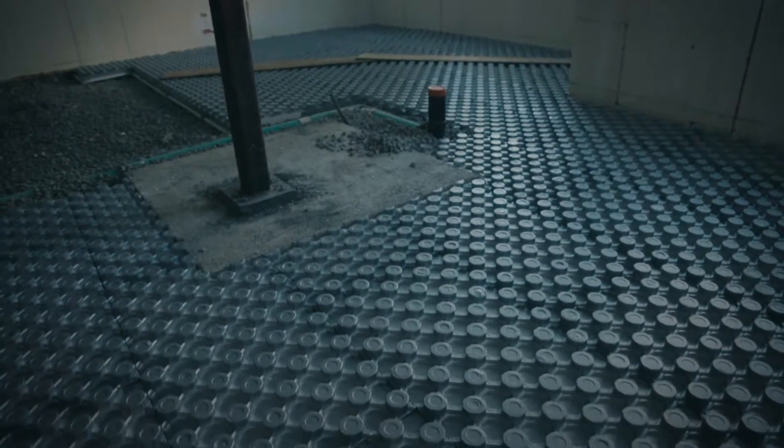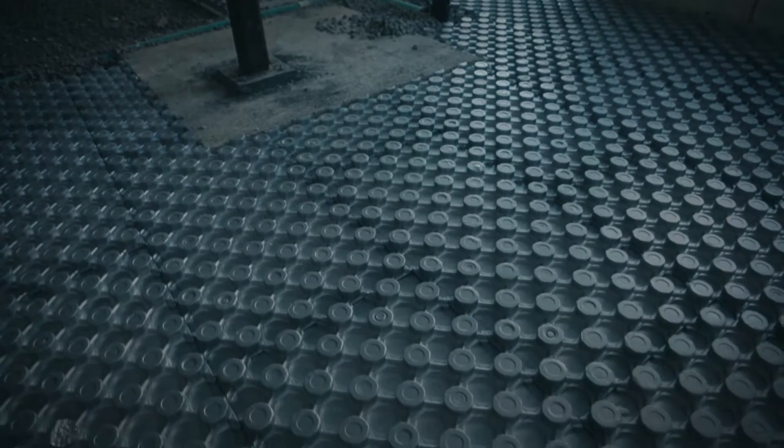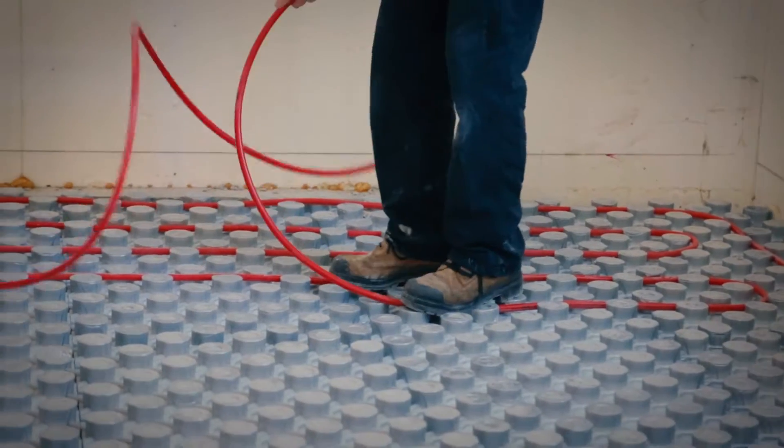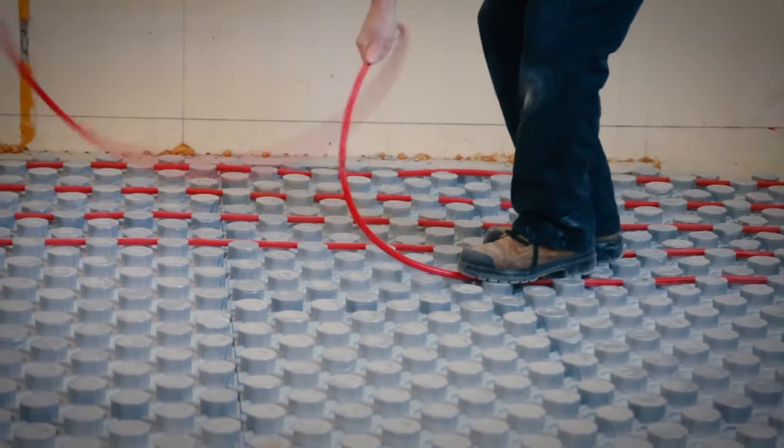The panel nubs form a mushroom shape to lock the PEX piping firmly in place. The PEX piping is easily inserted into the panel simply by walking on the tube.